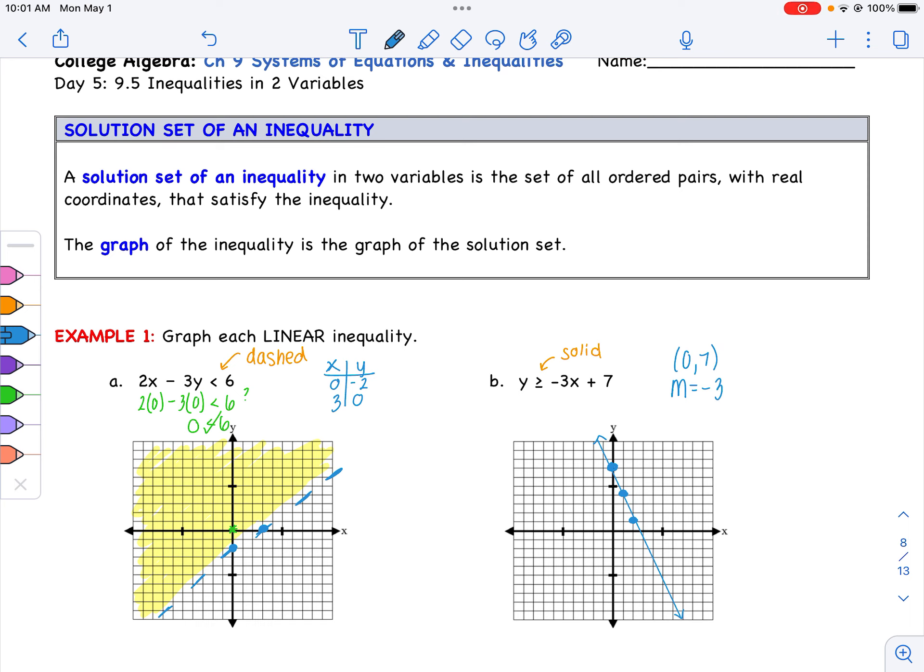And now I have to figure out where I'm shading. Again, I'm going to choose the point 0, 0 because it's clearly on one side of the graph and I'm going to see if it's a true fact. Is 0 greater than or equal to 7? That answer is no, that is not true. So this point and everything over here is not part of the solution, which means I shade to the other side. So those are our first two graphs with linear inequalities.